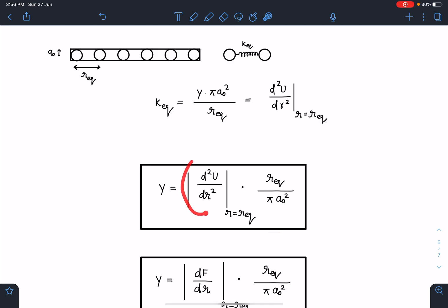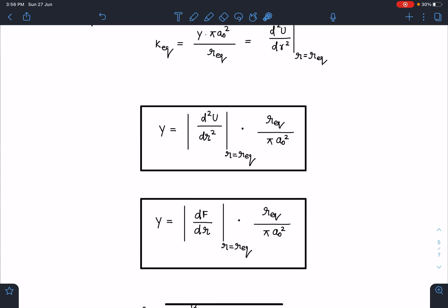Similarly, since d²U/dr² is nothing but dF/dr at r_eq, Young's modulus of solid can be approximated as |dF/dr| at r_eq times r_eq divided by πa₀².